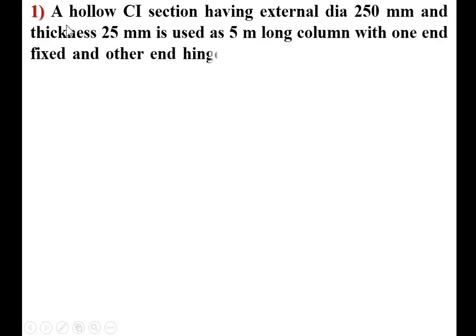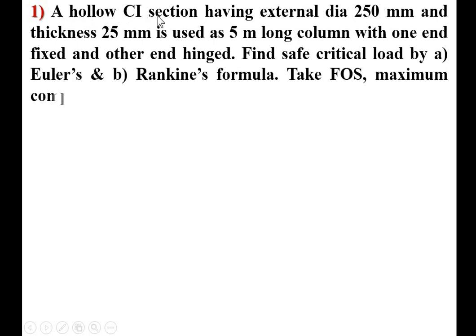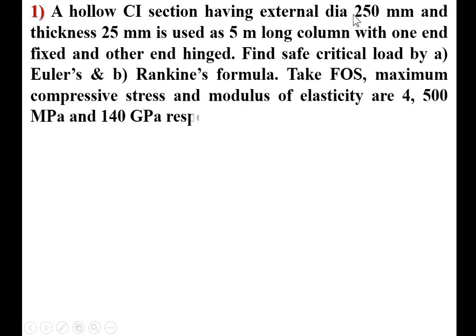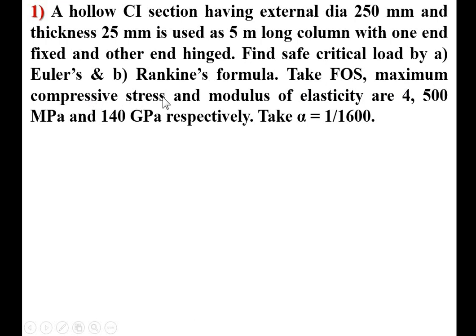First, always try to understand the description. A hollow CI (cast iron) section having external diameter 250 mm and thickness 25 mm is used as a 5 meter long column with one end fixed and the other end hinged. Find the safe critical load by first Euler's formula and second Rankine's formula. Take factor of safety (FOS), maximum compressive stress, and modulus of elasticity as 4, 500 MPa, and 140 GPa respectively.